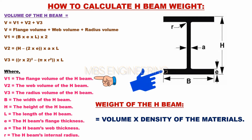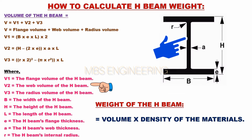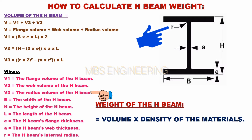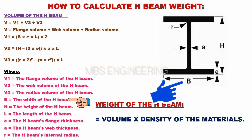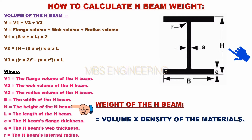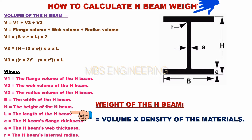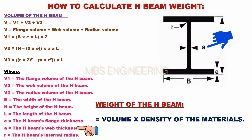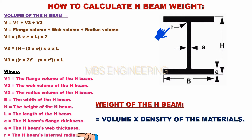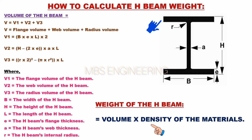Where: V1 is the flange volume, V2 is the web volume, V3 is the radius volume of the H-beam. B is the width, H is the height, L is the length, A is the flange thickness, A is the web thickness, and R is the internal radius of the H-beam. The weight of the H-beam equals volume multiplied by density.